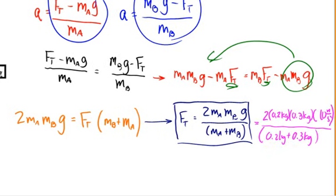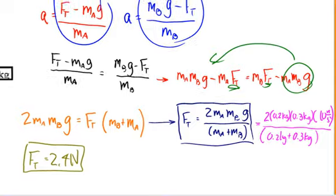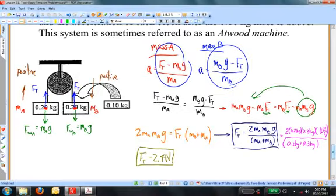Substitute the numbers in and put them into the calculator. The string tension is 2.4 newtons. I hearken back to the earlier statement: the string tension has to be somewhere between 2 and 3 newtons, and 2.4 newtons is indeed between those values. That checks out.